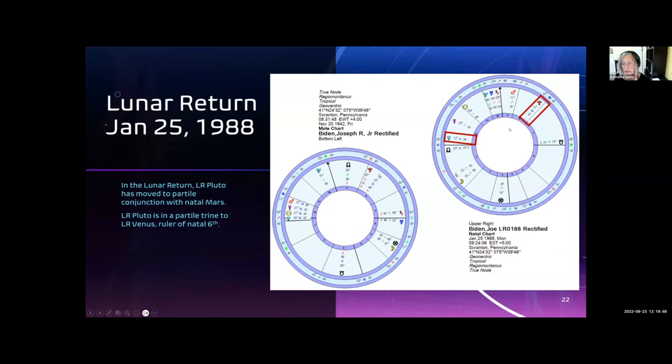And the lunar return, Pluto, returns to the 8th house in the solar return. It's, if you'll notice, it's at 12 degrees Scorpio with 27 minutes, and Mars in the natal chart is at 12 degrees Scorpio, 35 minutes. And it is also trine to Venus, which rules the natal 6th house. So, this seems to indicate that this is the triggering lunar month that the event would happen.